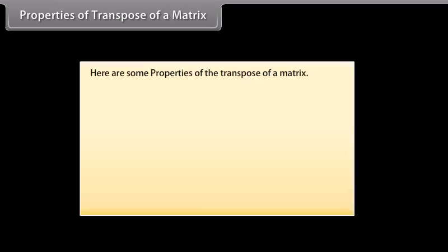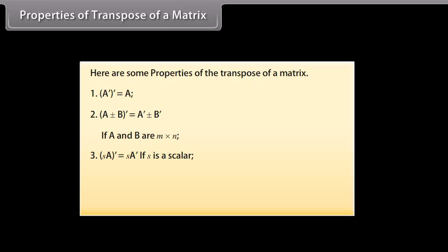Here are some properties of the transpose of a matrix. 1st: transpose of transpose of matrix A is equal to matrix A. 2nd: transpose of (A ± B) is equal to transpose of A ± transpose of B, if A and B are M×N. 3rd: transpose of (s·A) is equal to s times transpose of A, if s is a scalar. 4th: transpose of (AB) is equal to transpose of B times transpose of A, if A is M×N and B is N×P.